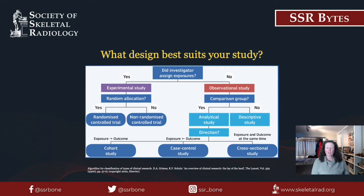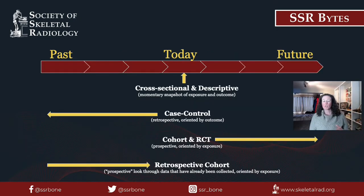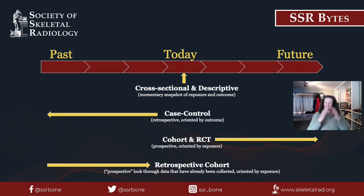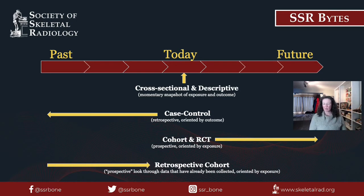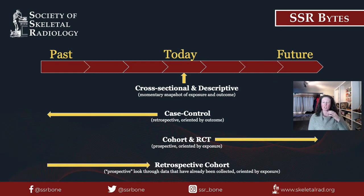Next, we are going to review the temporality in context of each study type. At the top of the slide, you see our very scientific and detailed timeline delineating the present, the past, and the future. All of the study types we're going to talk about have a different temporality in how they're performed and how the data are collected. A cross-sectional study is a look at today's data — what's happening at this moment or at some specified snapshot in time.